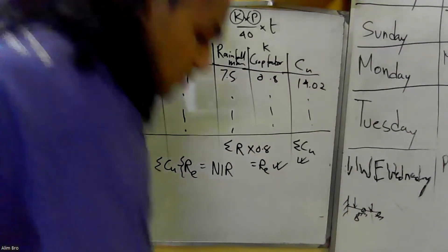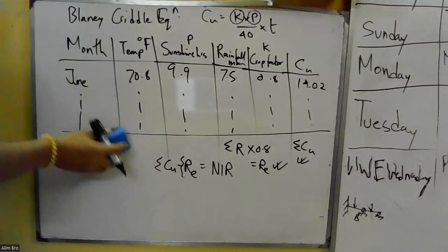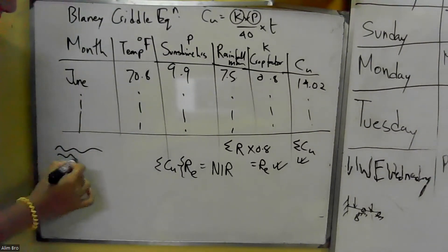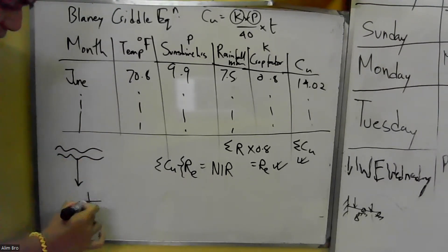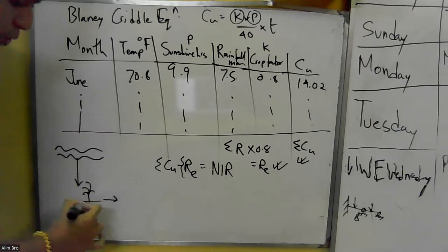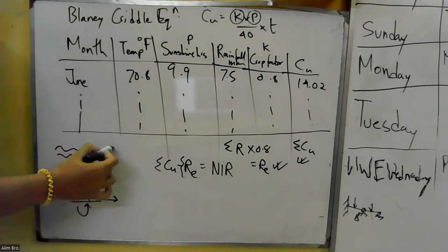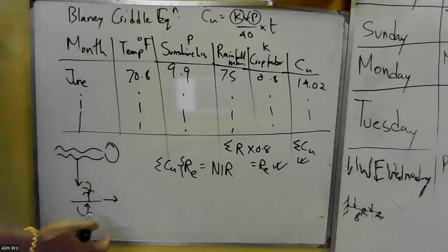An important concept related to water losses: water taken up by plant roots — root uptake. Water lost in the field is a key consideration in irrigation efficiency.